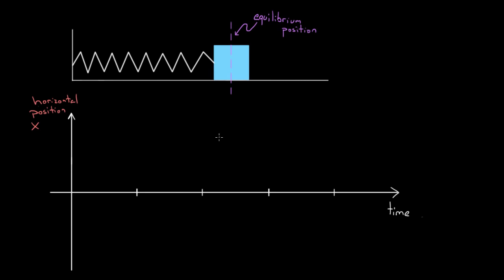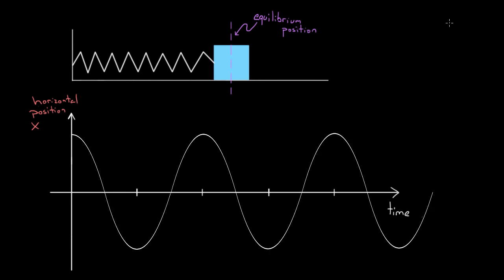We saw that you could represent the motion of a simple harmonic oscillator on a horizontal position graph, and it looked something like this. The amplitude of that motion—the maximum displacement from equilibrium—on this graph was just represented by the maximum displacement from equilibrium, and it looked like this.